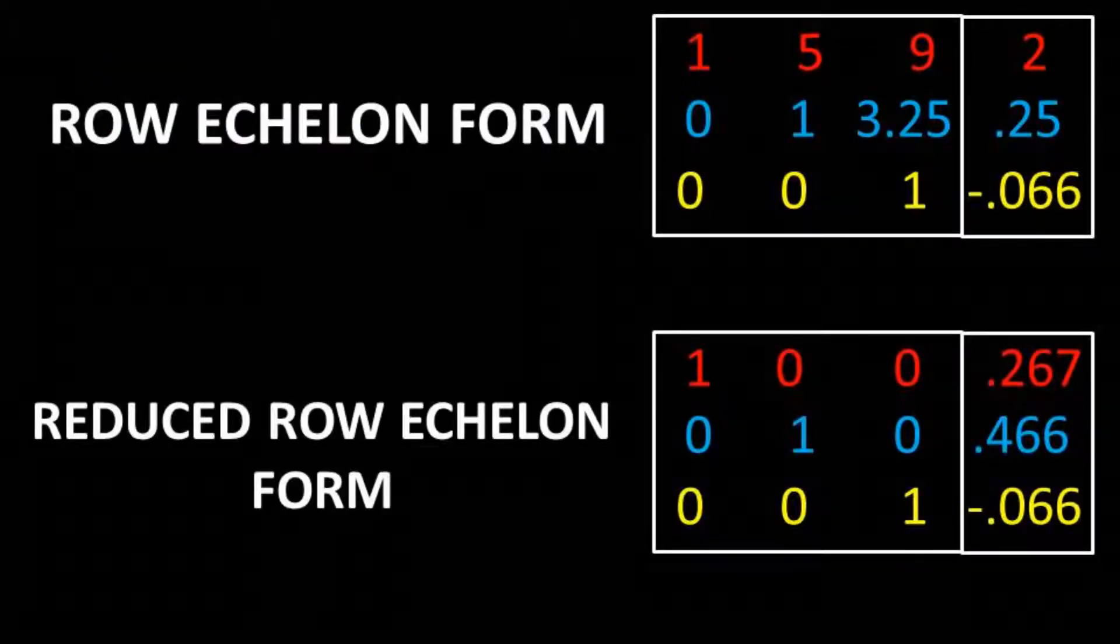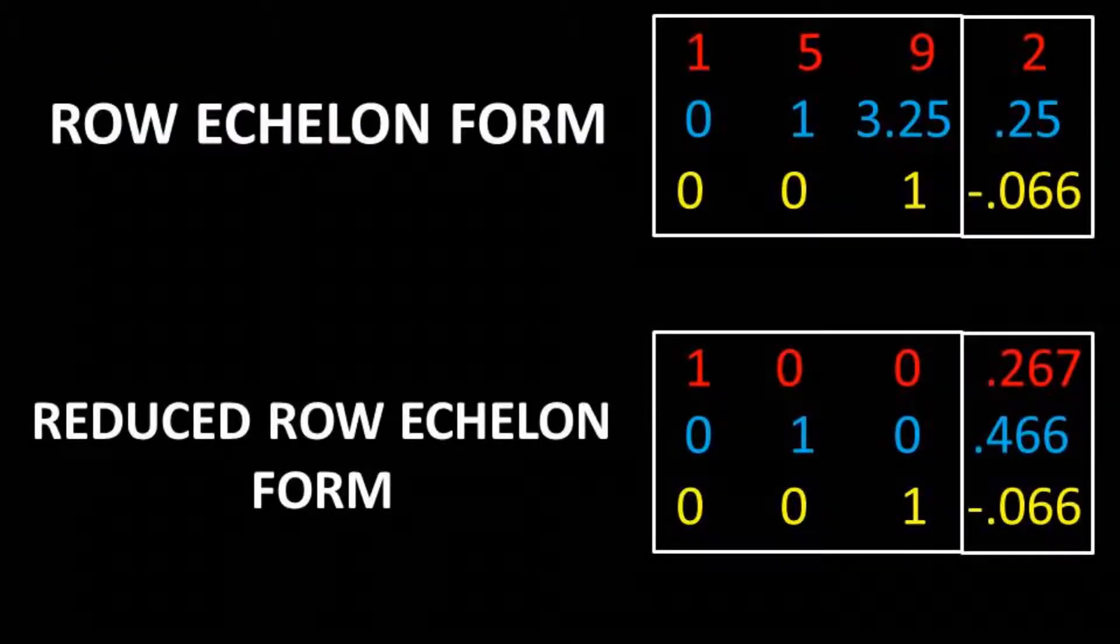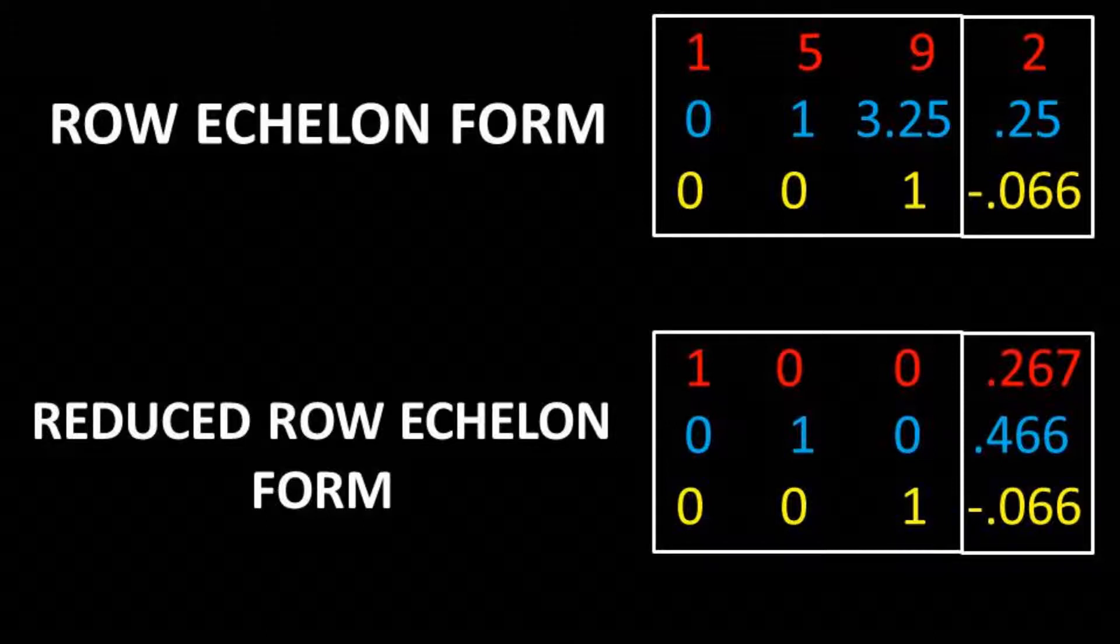The goal with row reduction is to get a number one in each of the rows going down at a diagonal with all zeros in the left bottom corner of the matrix. This is known as row echelon form.